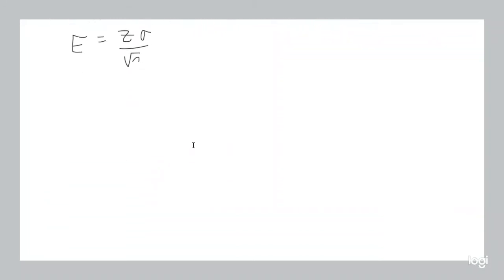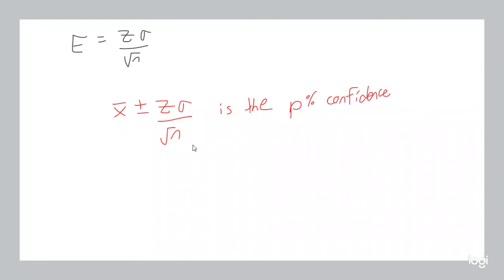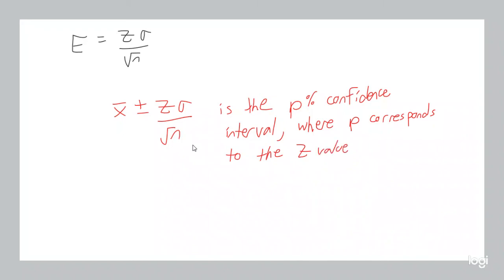So what this statement means is that the probability that the difference between our sample mean and the population mean is within z·σ/√n is equal to p, where p is the probability corresponding to your z value. Our conclusion is that x-bar plus or minus z·σ/√n is the p×100 percent confidence interval, where p corresponds to the z value. Next we'll do a number of examples that will solidify this.